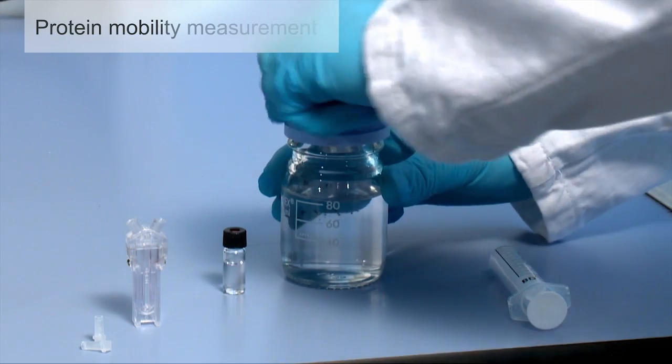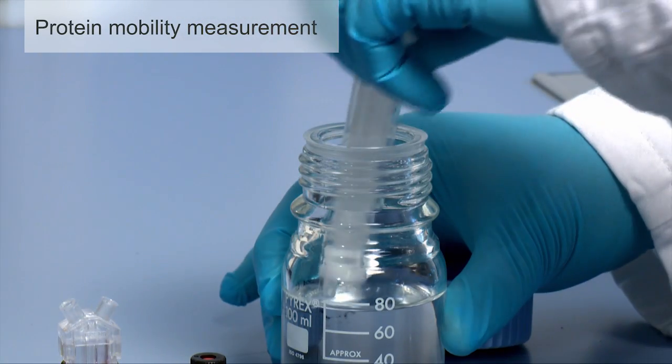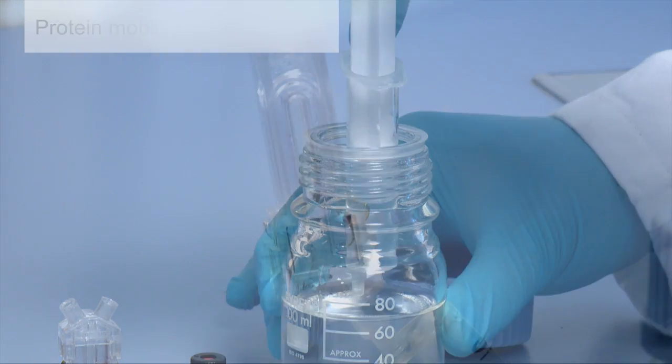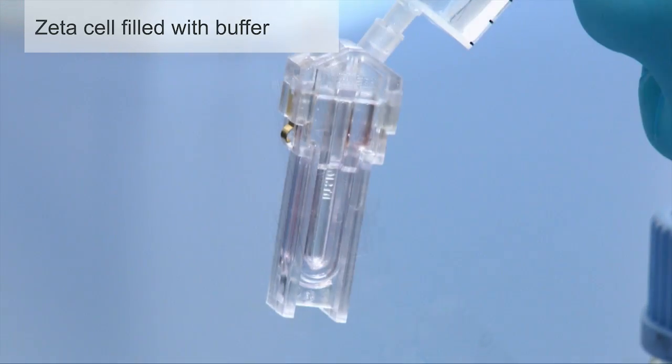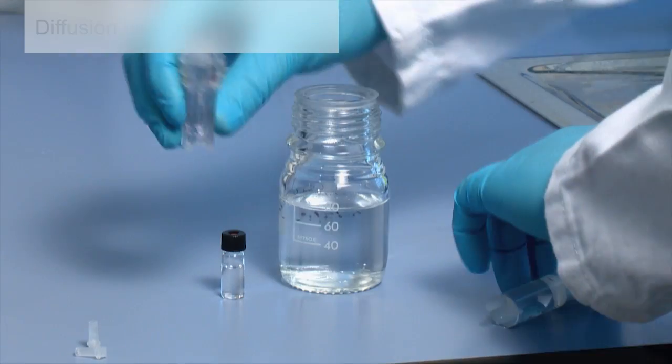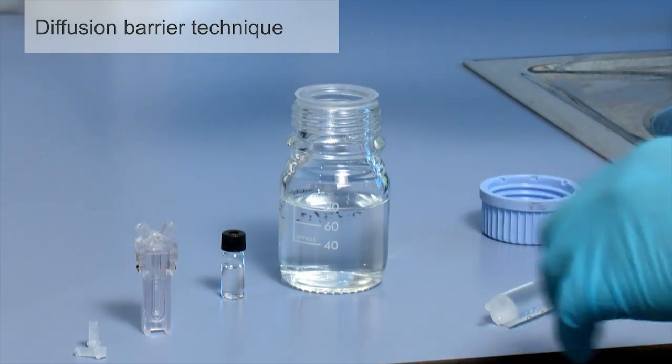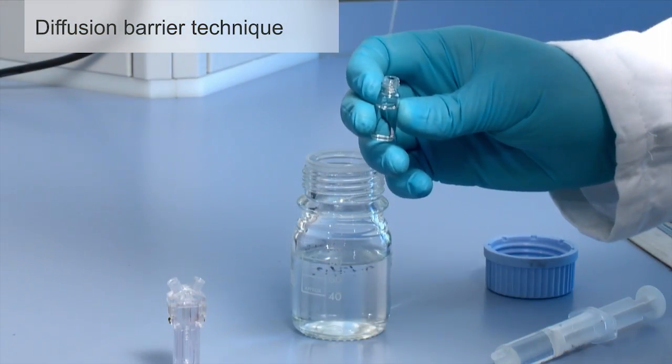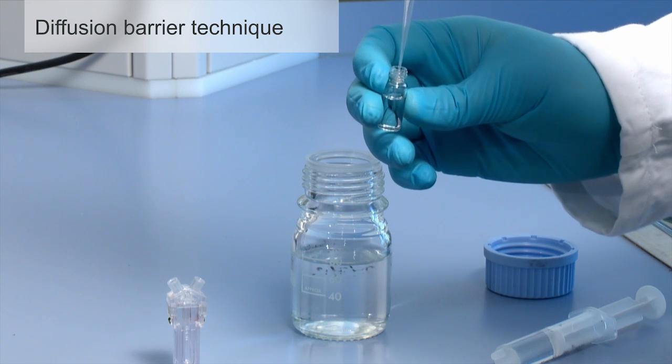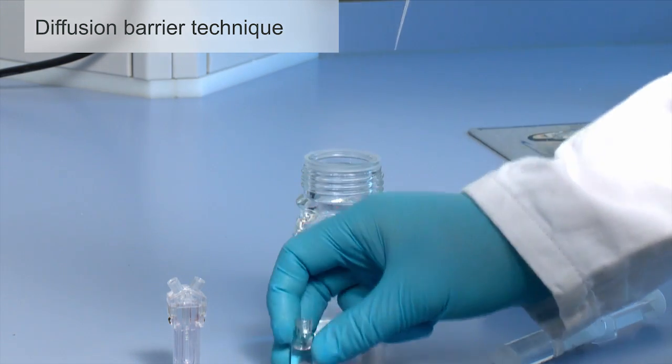Protein mobility measurements are best performed using the diffusion barrier technique which protects the sample from aggregation. First, the disposable folded capillary cell is filled with a liquid in which the sample is dispersed. The diffusion barrier technique separates the sample molecules from the electrodes so the effect on the protein caused by the measurement is dramatically reduced.